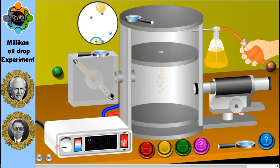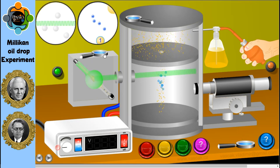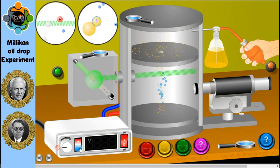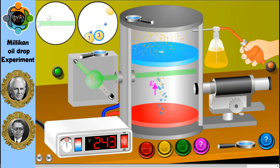He then applied an electrical field to the droplet by placing two metal plates near each other. The electrical field caused the droplets to move up or down in the chamber. Millikan adjusted the field until the droplets were stationary, either suspended between the plates or falling at a constant speed.